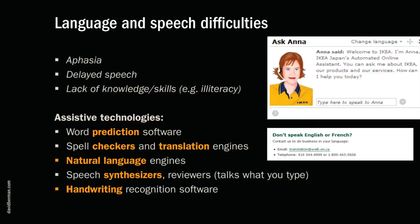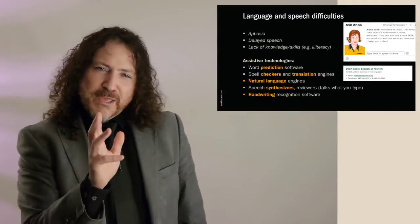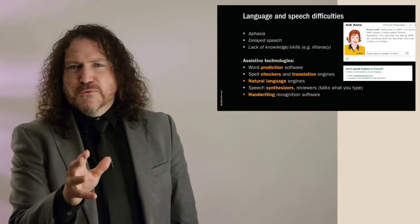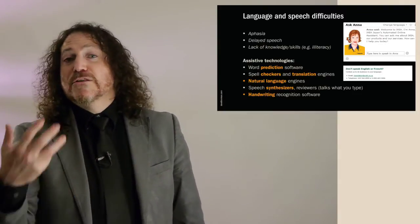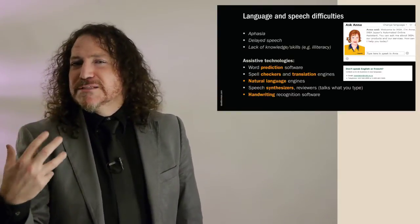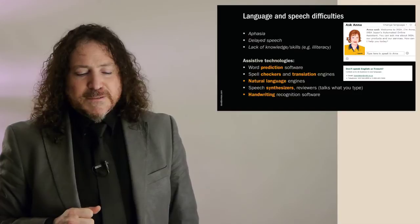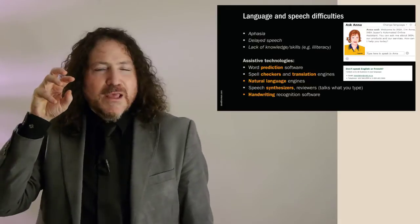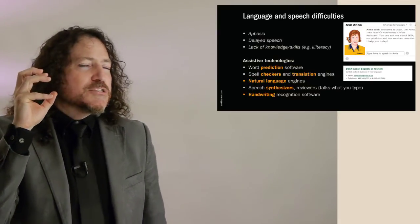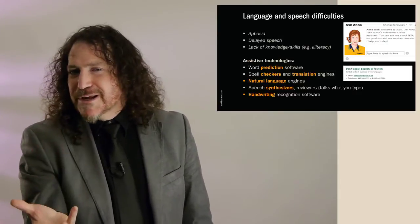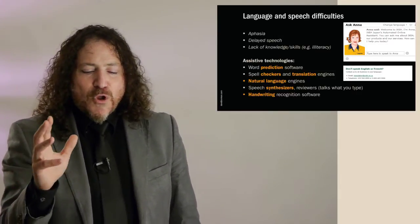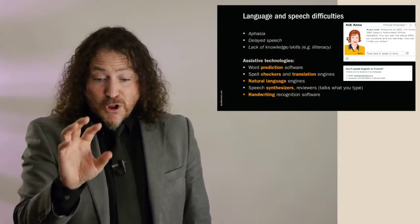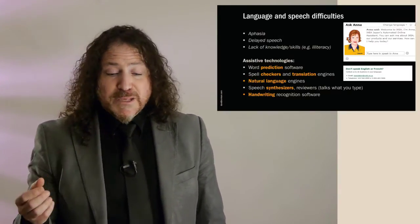The fourth group are language and speech difficulties, and there's quite a range of challenges here. It could be simply that someone didn't learn how to speak the language of your site early in life — we humans were designed to acquire language at age three or four, so if someone acquired English or French later in life, it's never going to be as natural as if they learned it as an infant. As well, some people are just wired differently — for some, language comes in differently, and for others the way they express themselves is very different. We have a range of technologies which can help mitigate for language and speech problems.